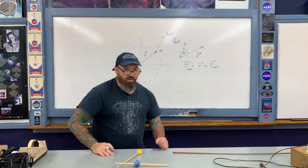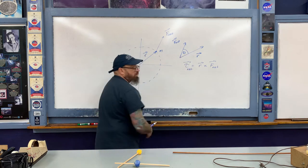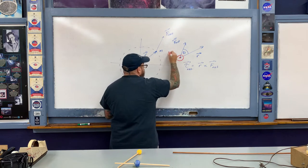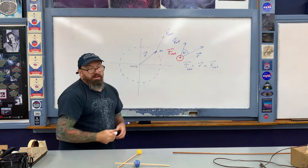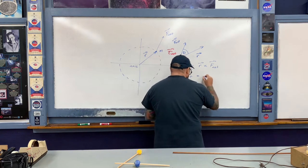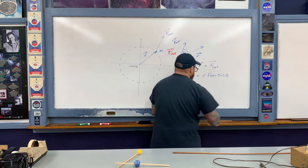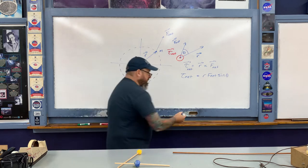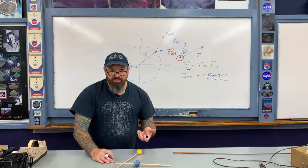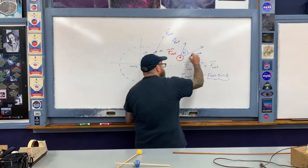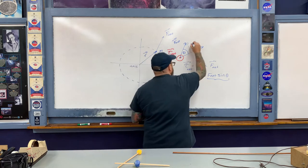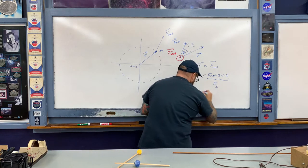Using the right-hand rule for r cross F, the net torque vector comes out of the board — represented by a circle with a dot. The magnitude of the net torque is r times F_net times sine of the angle theta. Within this magnitude, the quantity F_net·sinθ describes the component of the net force perpendicular to the moment arm, called F_perpendicular.